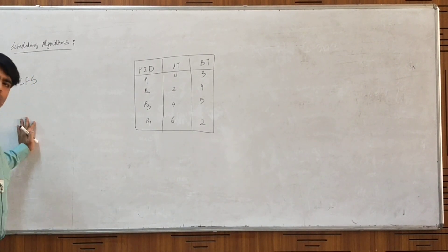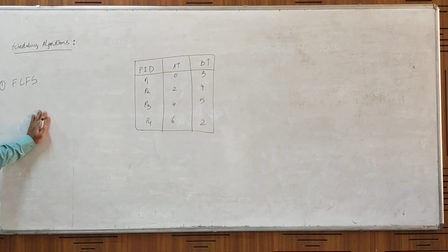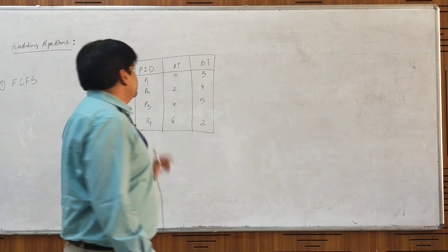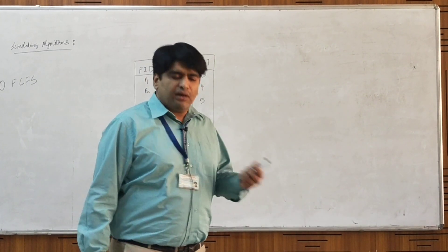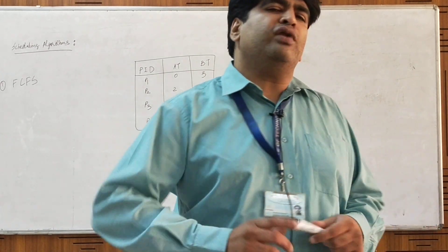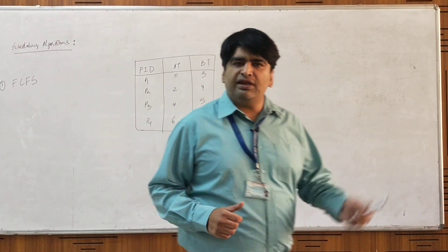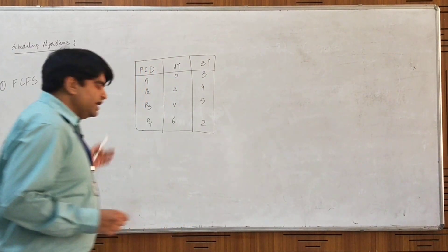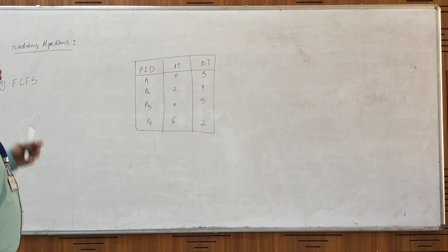The first type of algorithm is the First Come First Serve scheduling algorithm, or FCFS. It is a non-preemptive type of scheduling algorithm, meaning that a processor allocated to one process can only be taken back after that process has completed its execution or if that process releases it voluntarily.